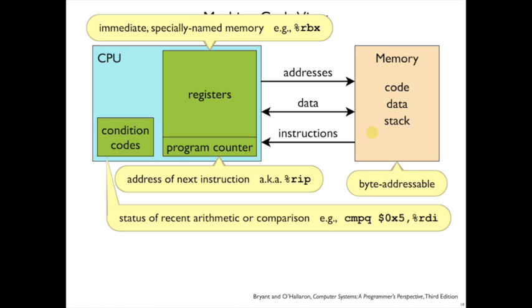Meanwhile, we have memory over here, which is byte addressable. The CPU sends over addresses to get data back, or it sends addresses and data to set data in memory, or it sends an address over and gets instructions back from memory.